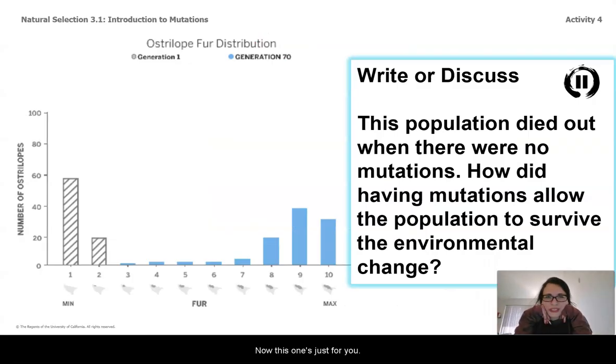Now this one's just for you. So this population died out when there were no mutations. How did having mutations allow the population to survive the environmental change to cold? Go ahead and pause and think that through.